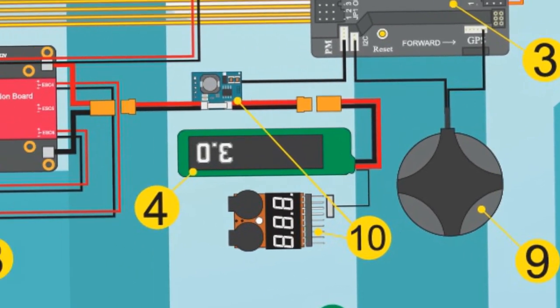The power module permits measuring current consumption and provides stable voltage. It allows triggering a warning when the battery is near its capacity or there is a power problem.